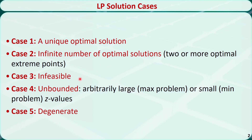Case 3: some linear programming problems may be infeasible. Case 4: some linear programming problems may be unbounded — that means they can take arbitrarily large z values for maximization problems or arbitrarily small z values for minimization problems. Case 5: some linear programming problems are degenerate, which means they have redundant constraints that can be removed without affecting the feasible region.